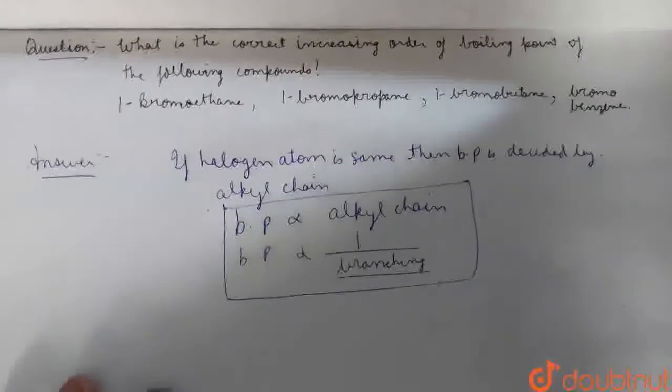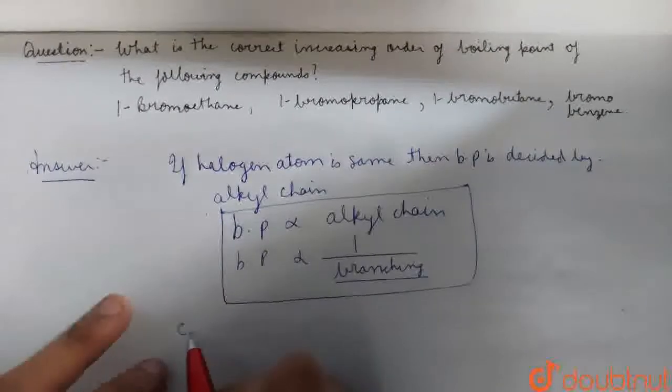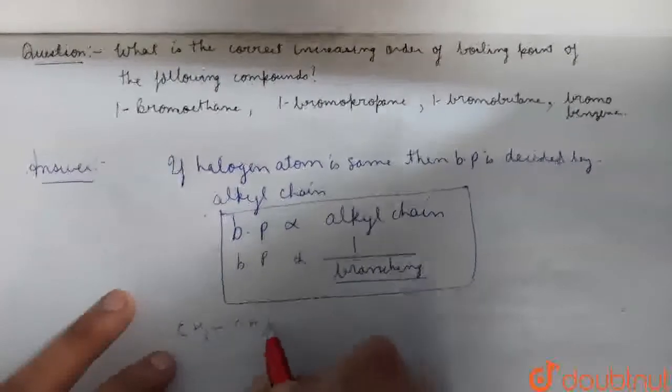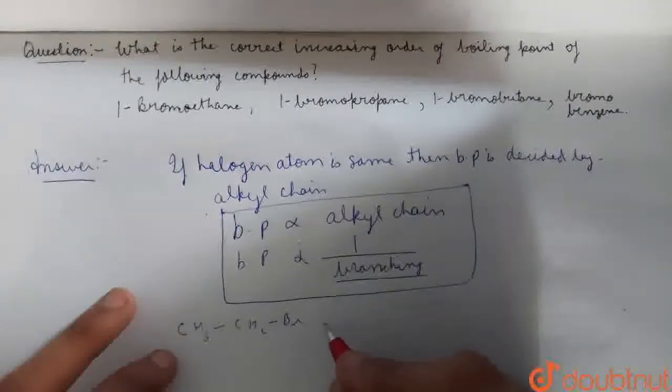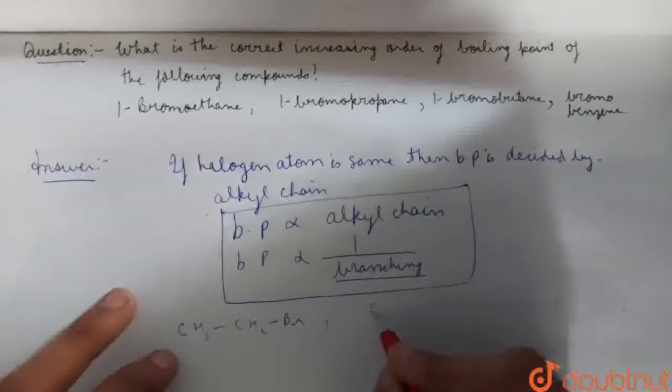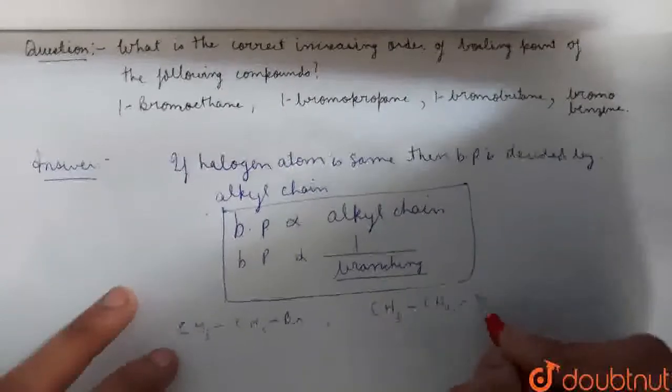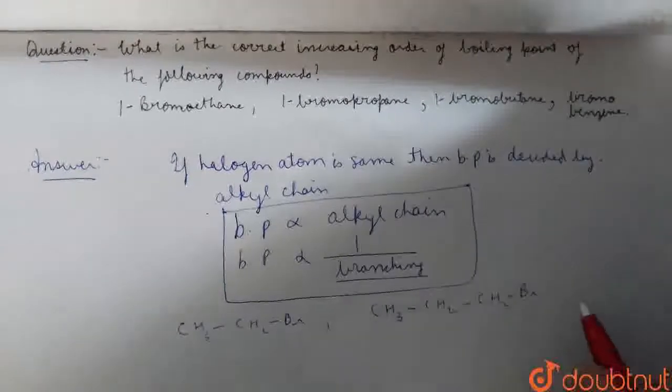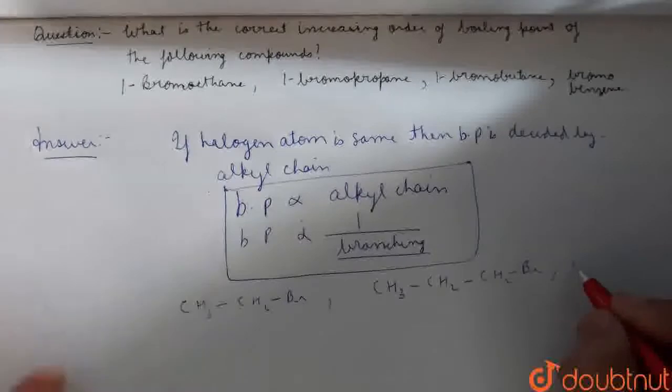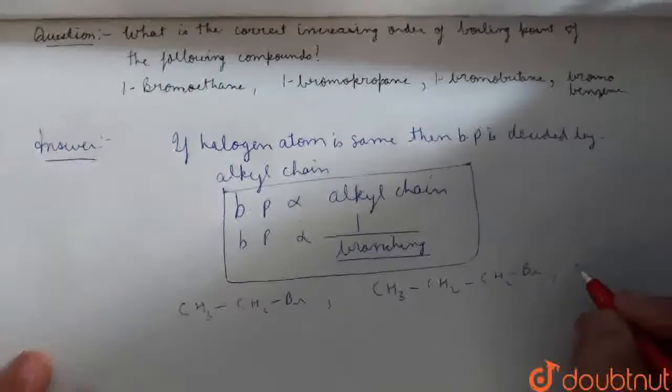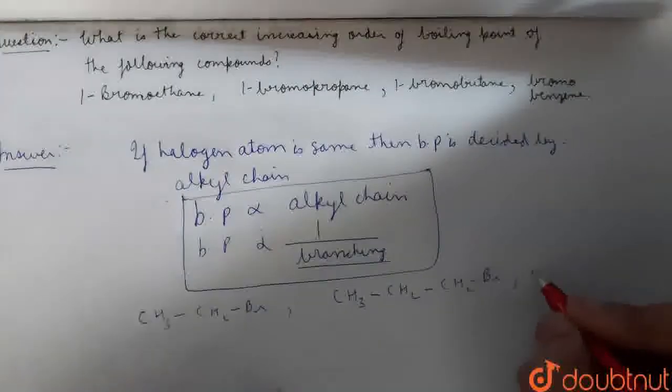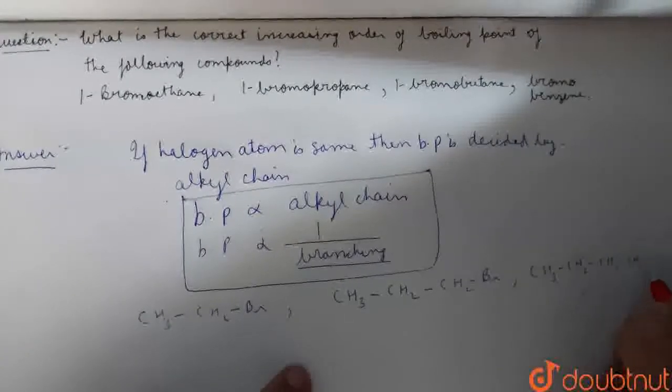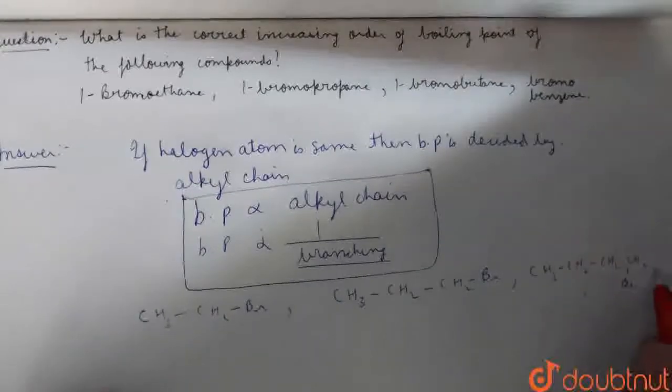Like the first compound, 1-Bromoethane, that is CH3-CH2-Br. Then 1-Bromopropane, this is CH3-CH2-CH2-Br. You can see the chain is growing. Then what is 1-Bromobutane?